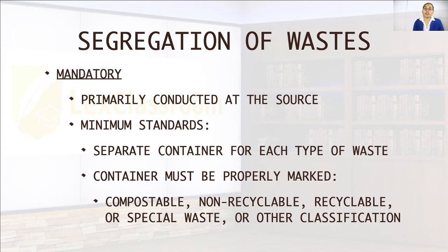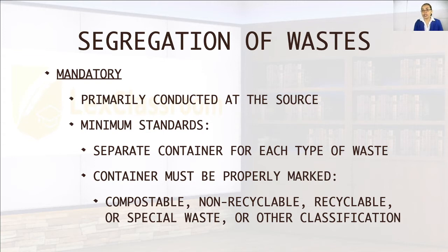The law mandates that the segregation of waste must be primarily conducted at the source. The minimum standards for waste segregation require a separate container for each type of waste, and the container must be properly marked. The law identifies the following classifications: compostable, non-recyclable, recyclable, special waste, or other classifications.